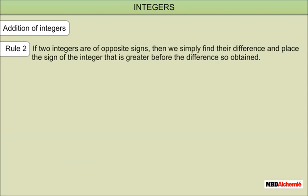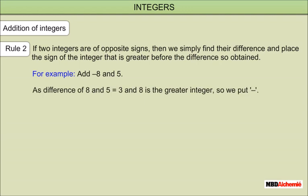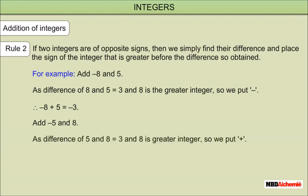Rule 2: if two integers are of opposite signs, we find their difference and place the sign of the greater integer before the difference. For example: negative 8 plus 5 — the difference of 8 and 5 is 3, and 8 is the greater integer so we put a negative sign — therefore negative 8 plus 5 equals negative 3. Similarly, negative 5 plus 8 equals positive 3.